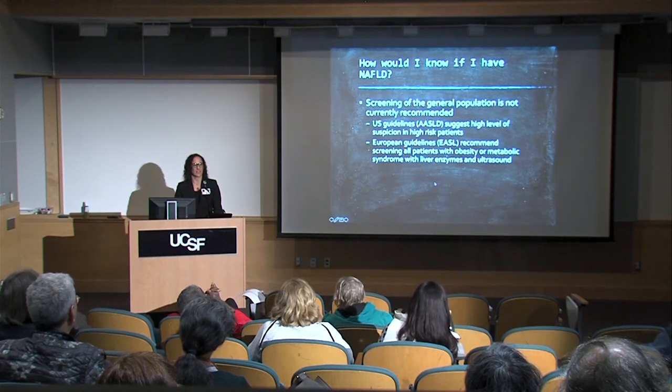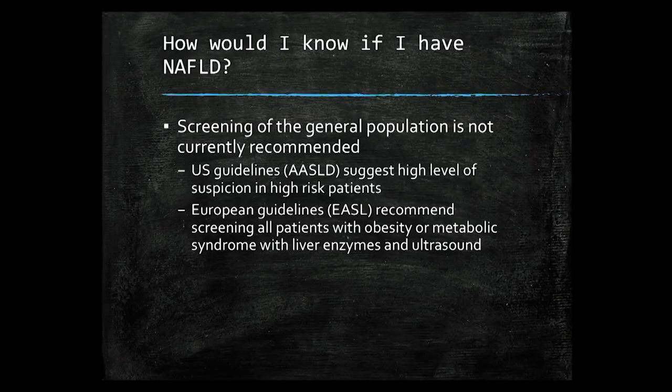Because fatty liver is so common, you might think we should screen at-risk populations. If you look at the U.S. guidelines from the American Association for the Study of Liver Disease (AASLD), they don't recommend screening. The recommendations suggest a high level of suspicion in high-risk patients, but stop short of recommending screening. Part of this is related to cost — screening about a third of the U.S. population can be quite costly, and if you don't yet have cost-effective treatments that reduce serious liver-related problems or death, then screening may not make sense, though I suspect this may change in coming years.